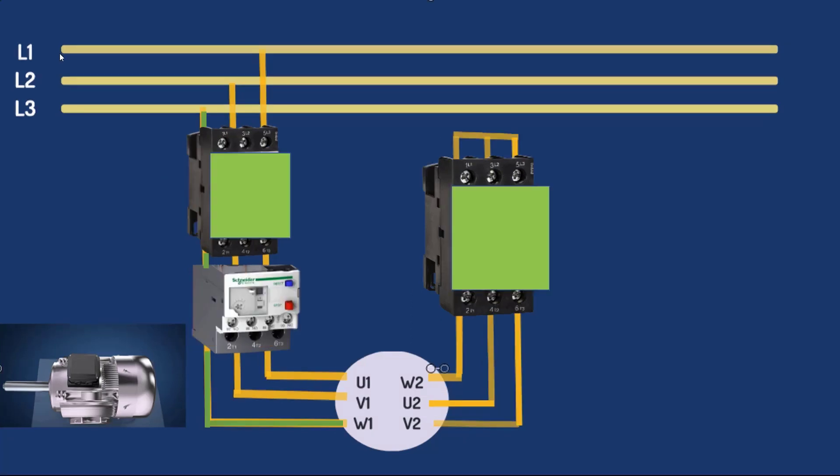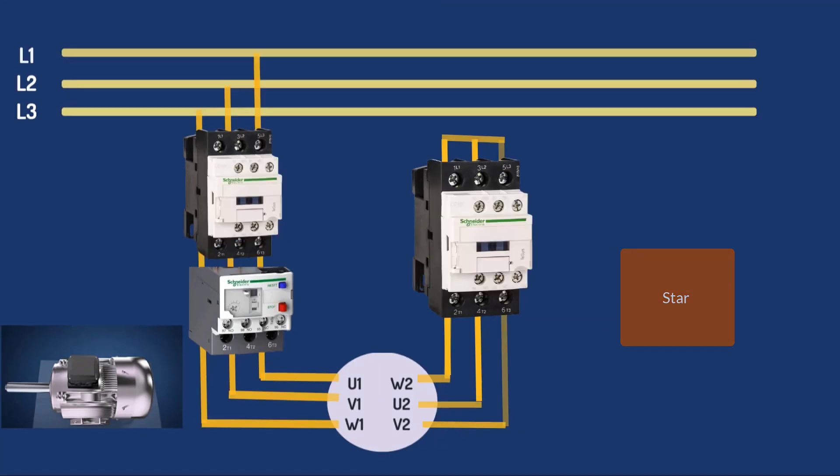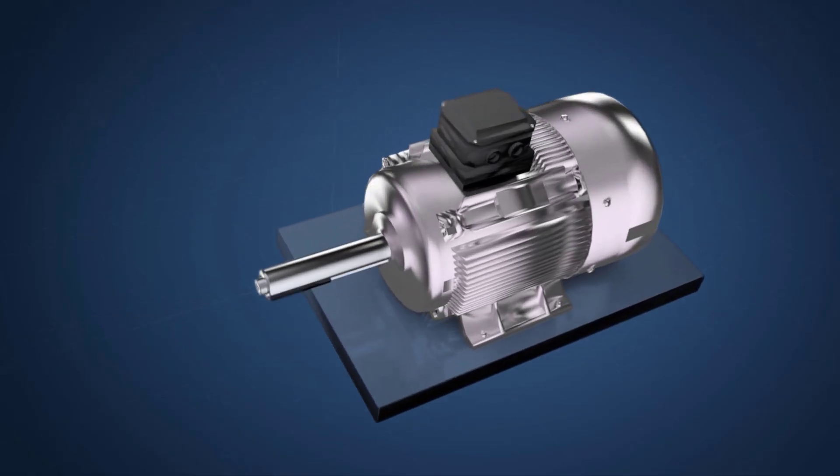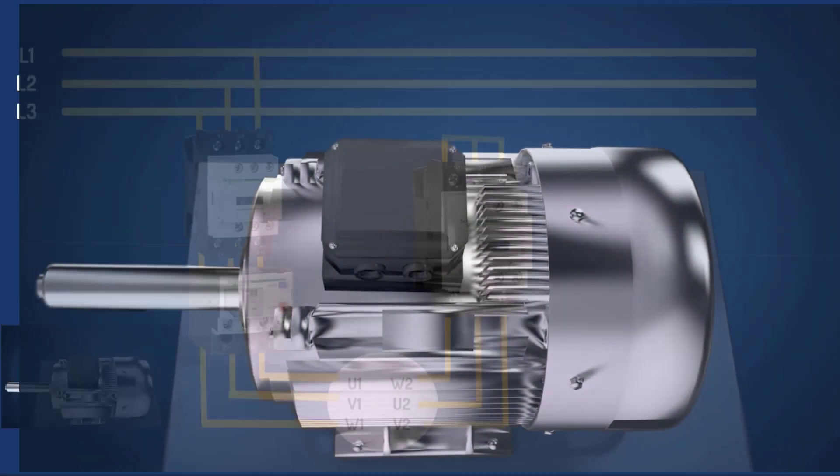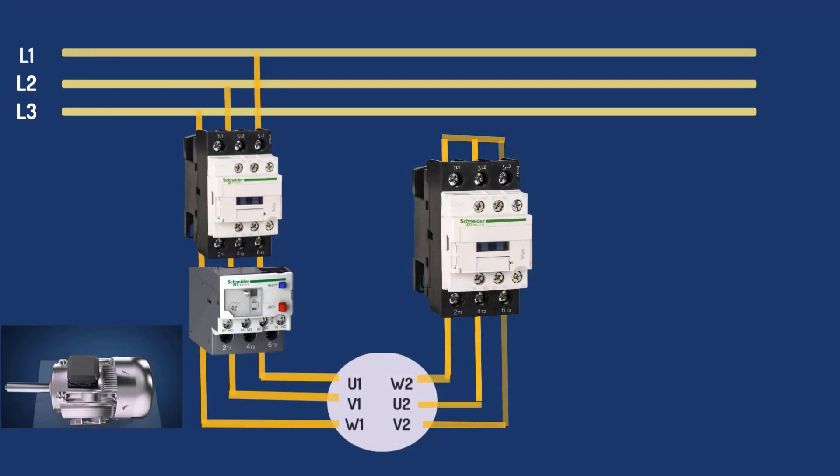When the main contactor and star contactor are energized, the motor will run in star connection. Around 58 percent less coil voltage is used when using star configuration compared to delta configuration. When the motor starts in star, there is less current in the coil which results in a drop in torque output. When the motor attains 90% of full RPM, a timer connected in the circuit is activated. It disconnects the star contactor first and connects the delta contactor into the circuit.